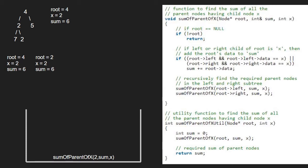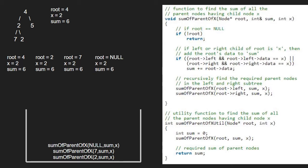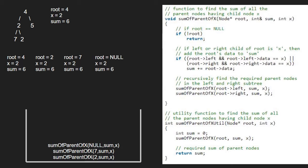We pass the left child of 2, which is 7, so root will point to 7. As root is not null, we check if 7's left or right is 2. As it is not true, we pass the left child of 7 which is null, so root will point to null and we return to the previous call. Next we pass the right child of 7 which is also null. Since root is null, we return to the previous call and finish execution for root 7.